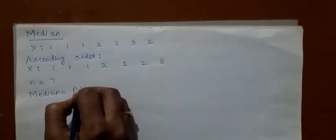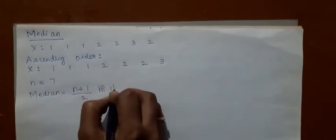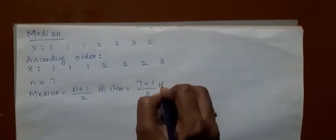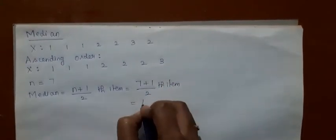Students, consider this data. To compute the median, you should first arrange the data in ascending order of magnitude. Here the value of n is 7. So, median for individual series is equal to the formula (n + 1) / 2 th item. So, 7 plus 1 by 2 th item — that is 8 by 2, which is the 4th item.